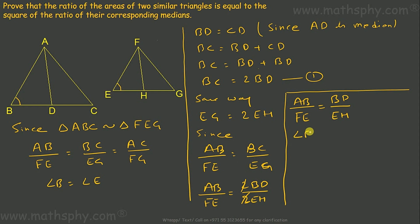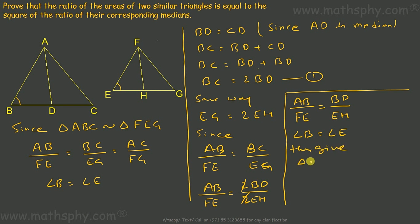I already have angle B equal to angle E. Angle B is included between sides AB and BD, and angle E is included between sides FE and EH. So in triangles ABD and FEH, angle B equals angle E, and the sides including those two equal angles are in the same ratio. This gives triangle ABD similar to triangle FEH by SAS similarity.